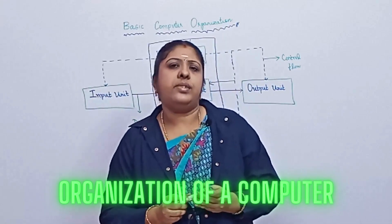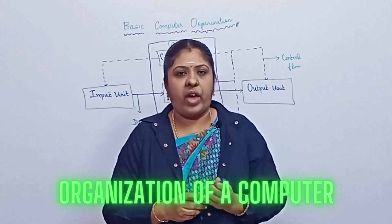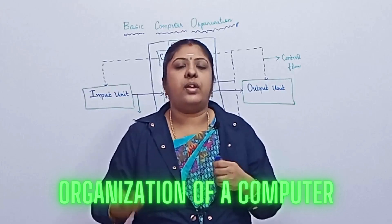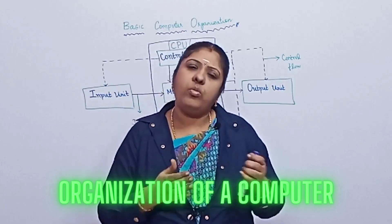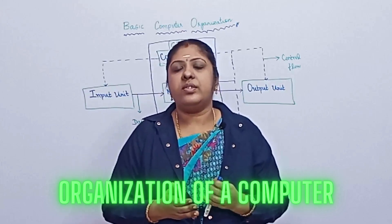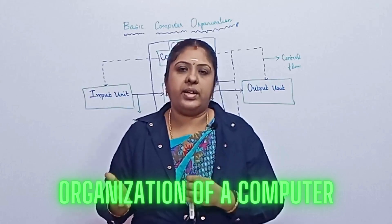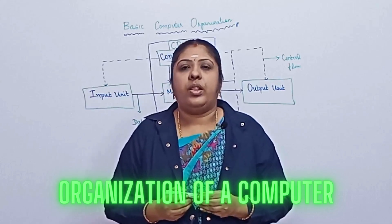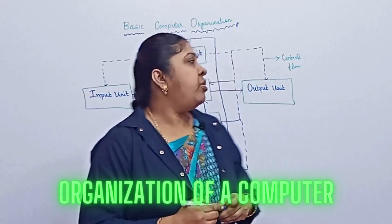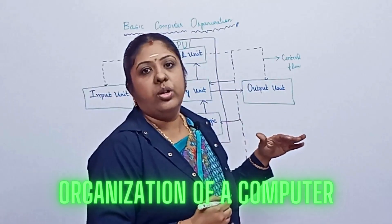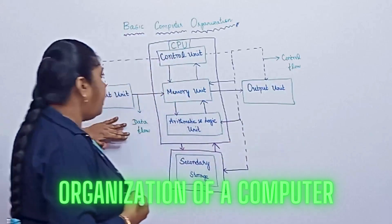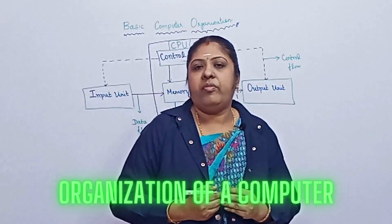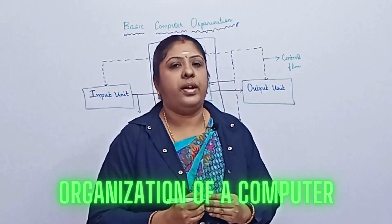In the olden days, computers used vacuum tubes — large processors for processing and large devices for storing. Now everything has been changed into very small integrated chips and very small components. The basic computer can be divided into three parts: an input unit, a CPU, and an output unit. We will see each one in detail.